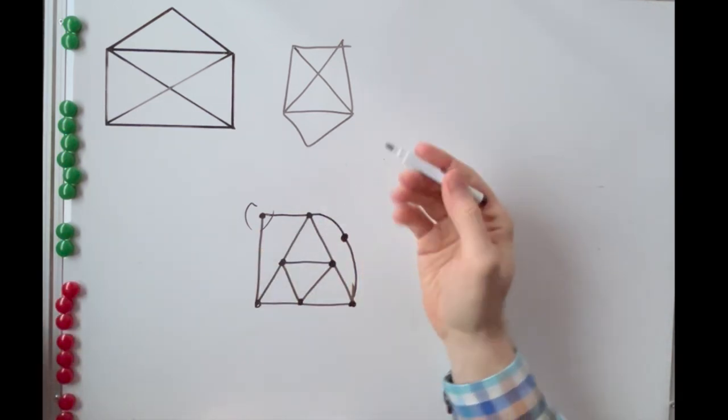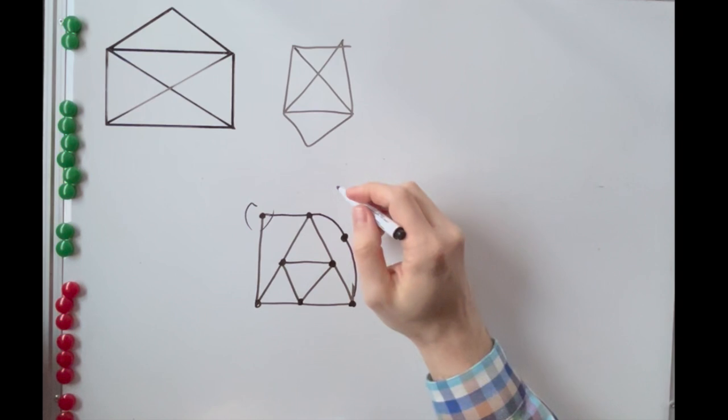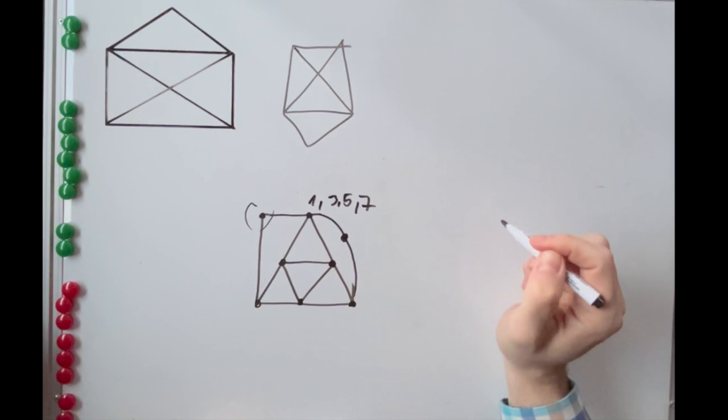We're only interested in nodes where an odd number of lines meet, for example, three, five or seven lines, but also where a single line ends. We'll get back to that in a minute.